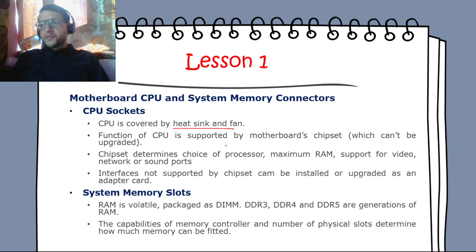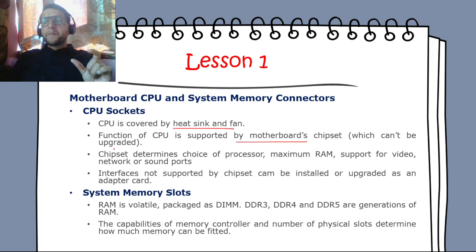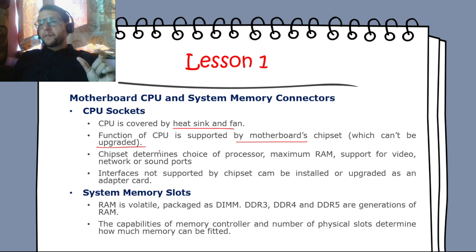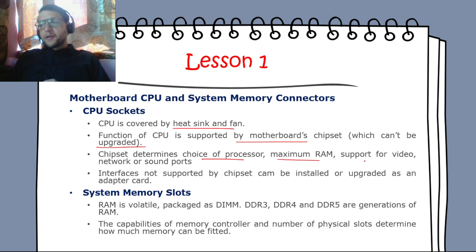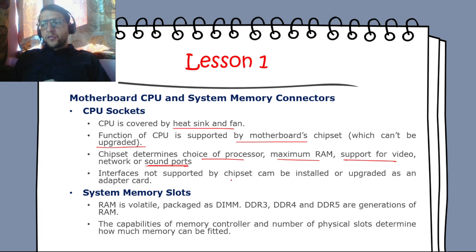The CPU is covered by a heat sink and fan. The CPU's function is supported by the motherboard chipset, which cannot be upgraded. The chipset determines the processor choice, maximum RAM support, and video/network/sound port interfaces. Any interfaces not supported by the chipset can be installed or upgraded as adapter cards.